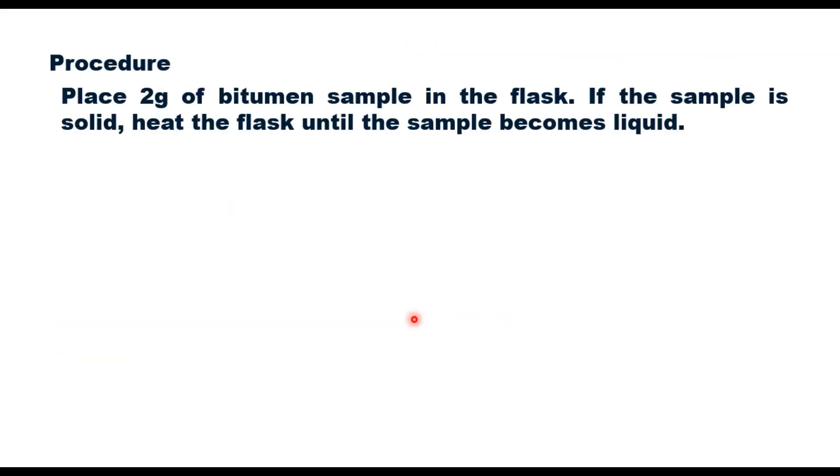The procedure is very simple. Take 2 grams of bitumen sample in the flask. If the sample is solid, heat the flask until the sample becomes liquid.